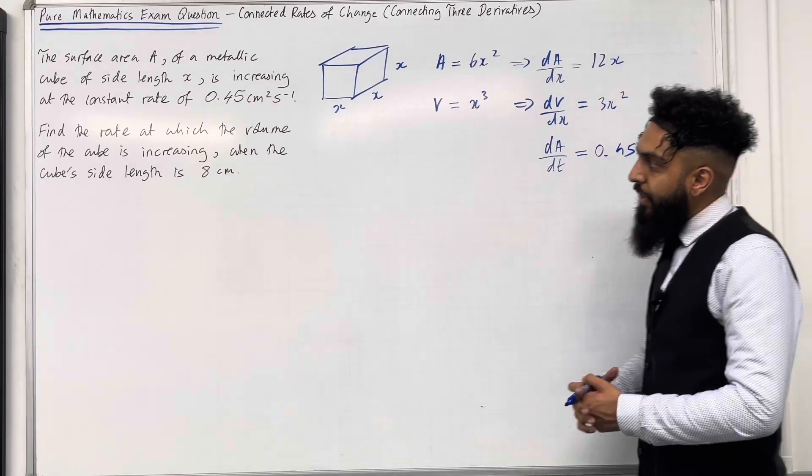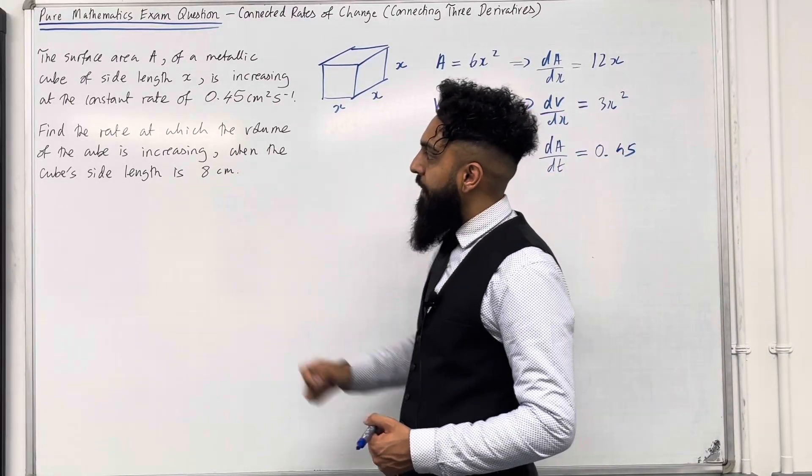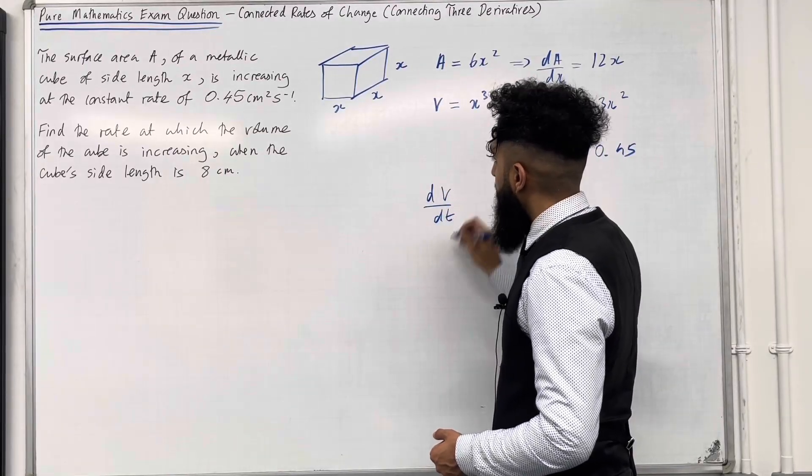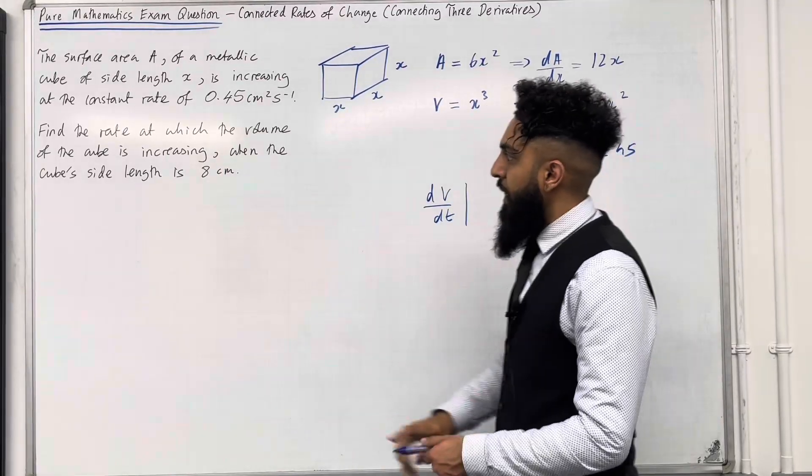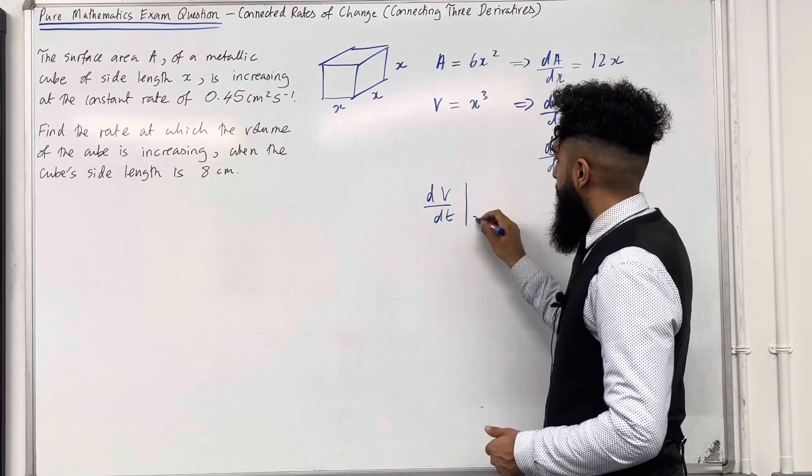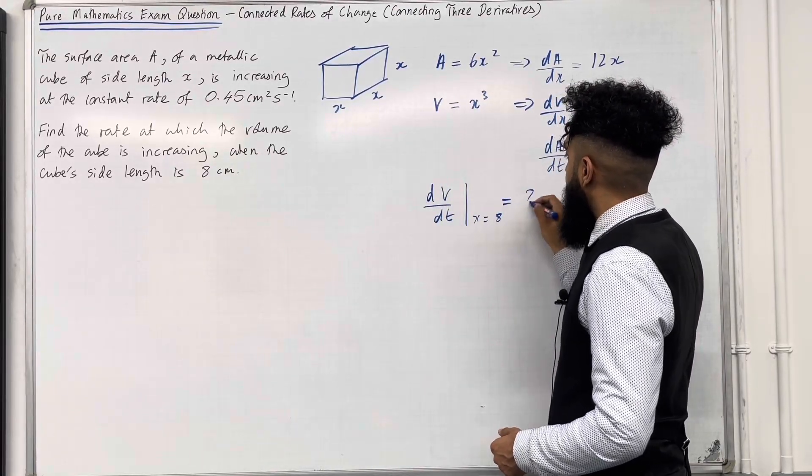My target is to find the rate at which the volume of the cube is increasing. So I'm trying to work out dV over dt when the side length is 8 centimeters, when X is equal to 8. That is my target.